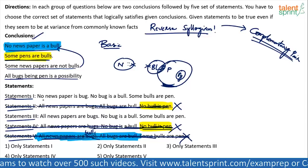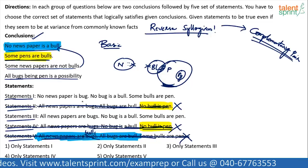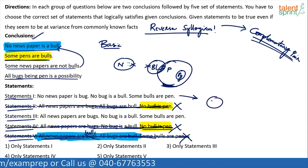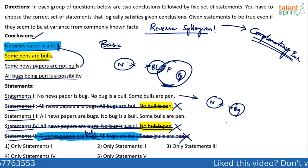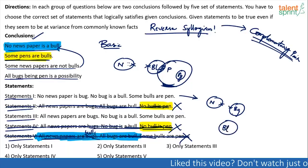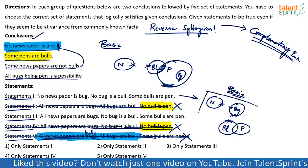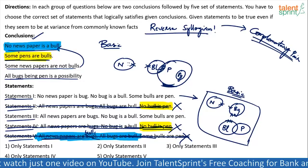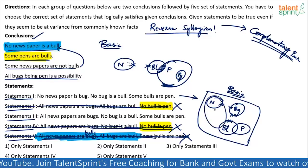First one: 'no newspaper is a bug' — does it go wrong somewhere? Let me draw the basic diagram for the first set of statements. 'No newspaper is a bug' — newspaper and bug will not touch each other. 'No bug is a bull' — bugs and bull also will not touch each other. 'Some bulls are pen' — so this is the basic diagram for the first set. Now check the conclusions against this basic diagram.